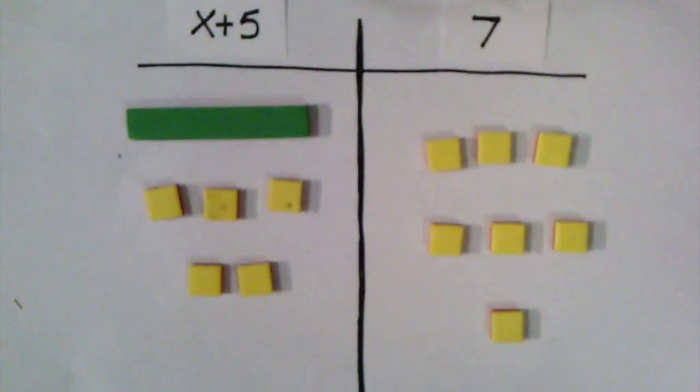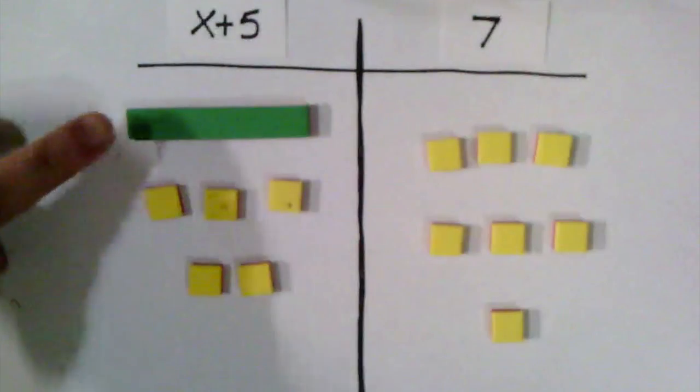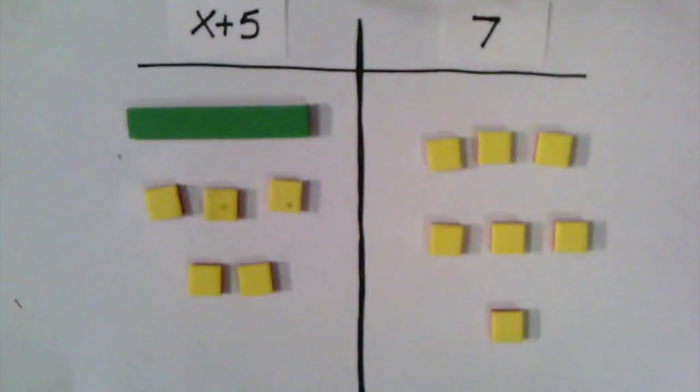So again, when we're solving equations, our goal is to try and get that variable on a side by itself. Meaning that we want the value of the left side of this equation to be equal to just an x. But right now it's equal to an x plus 5. This is where our idea of zero pairs comes in.